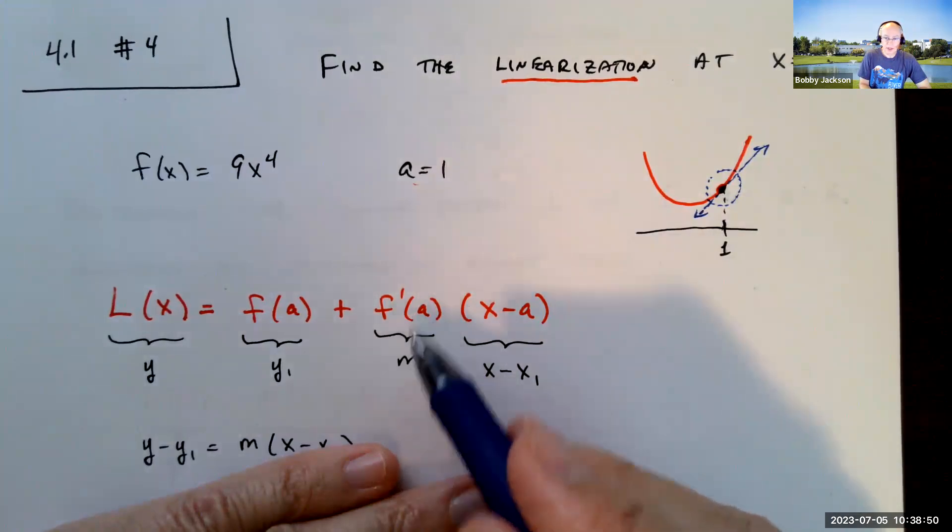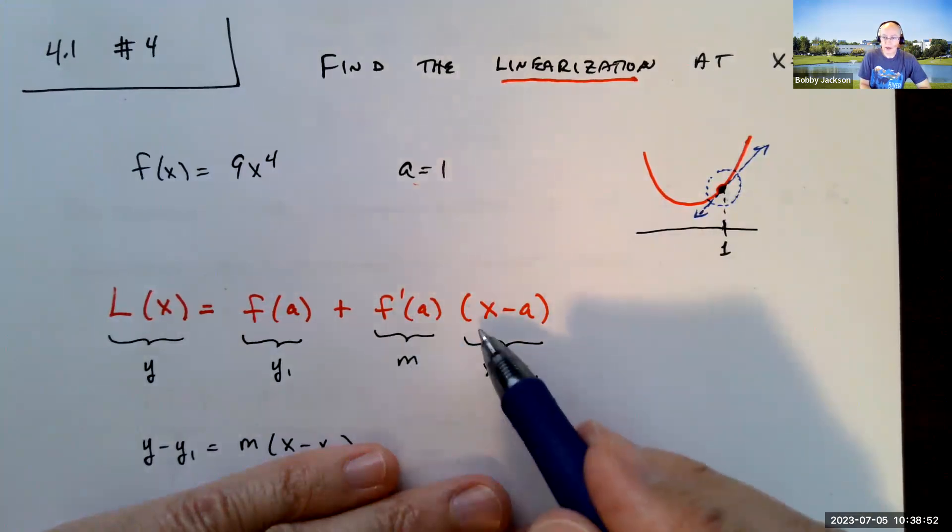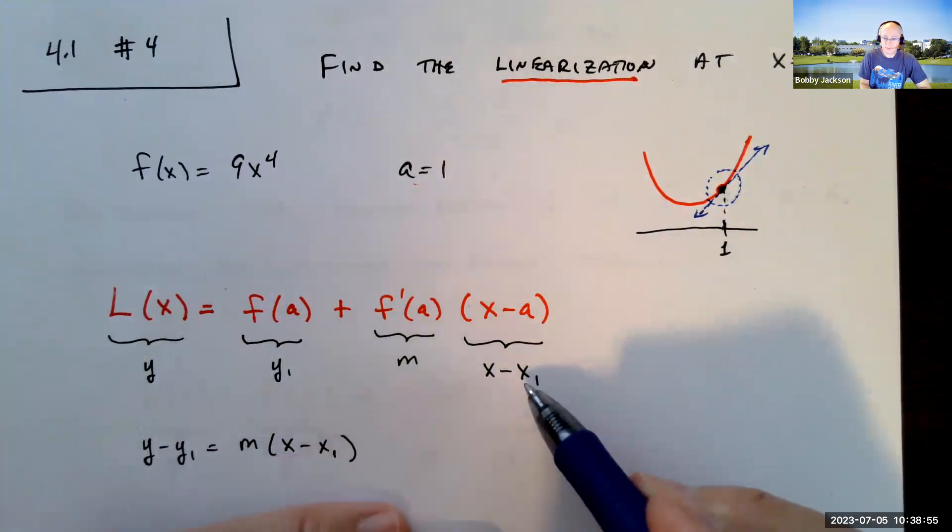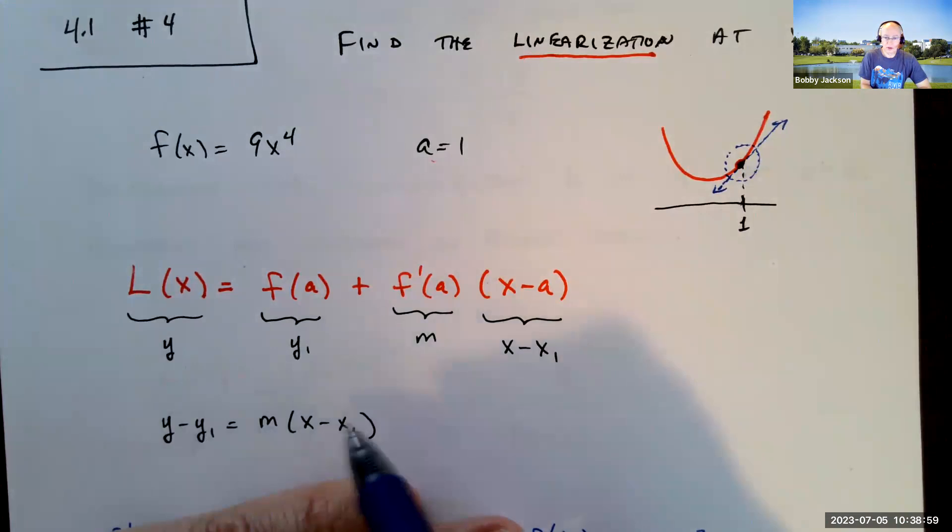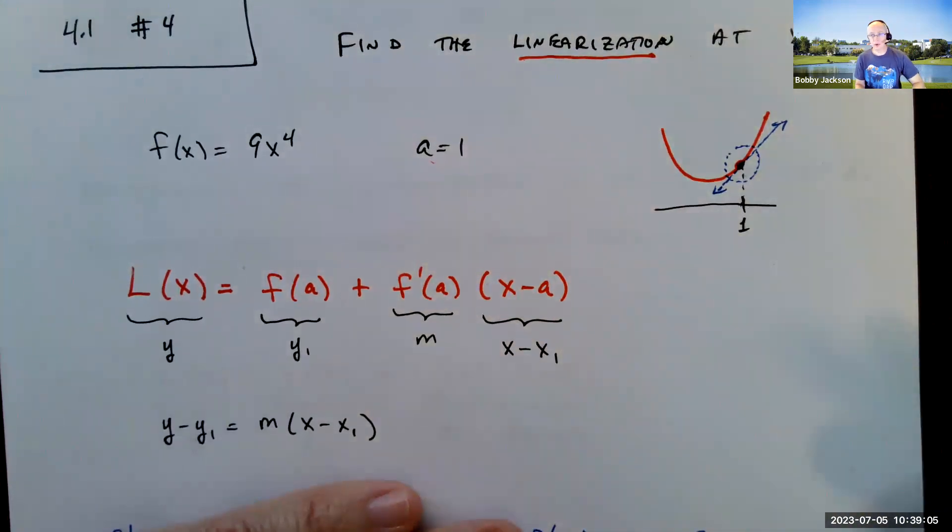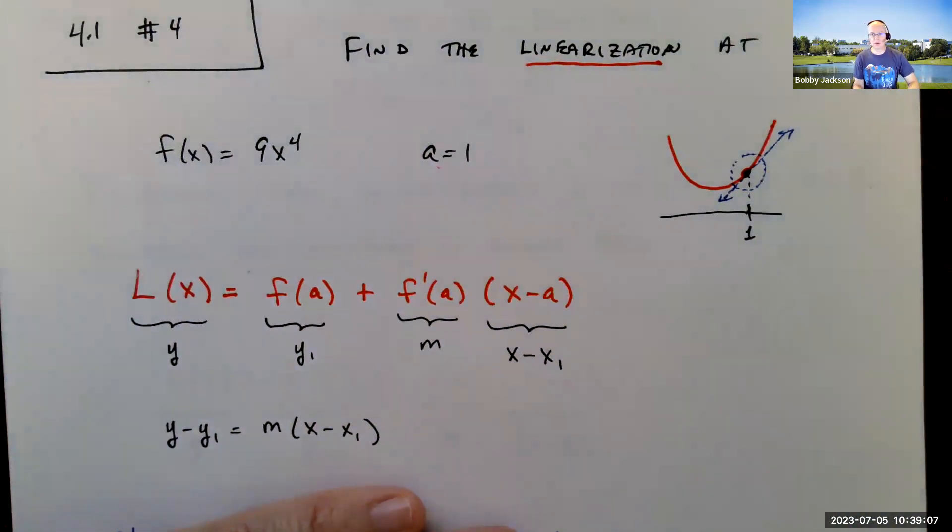f prime of a is what? That's the slope. That's the slope m of line. x minus a or x minus x1. And so I can subtract y1, and here's our regular equation for a line given the slope and a point x1, y1. And so it's just finding the equation of the tangent line is all we're doing here.